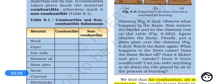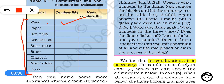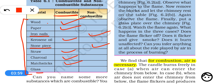If we want to know which substances are combustible and which are non-combustible, we try to burn them. Wood burns — it is combustible. Paper burns — it is combustible. But an iron nail does not burn — it is non-combustible. Kerosene burns, it is combustible. Stone does not burn, it is non-combustible. Straw burns, charcoal burns, magnesium burns, but glass does not burn — it is a non-combustible substance.